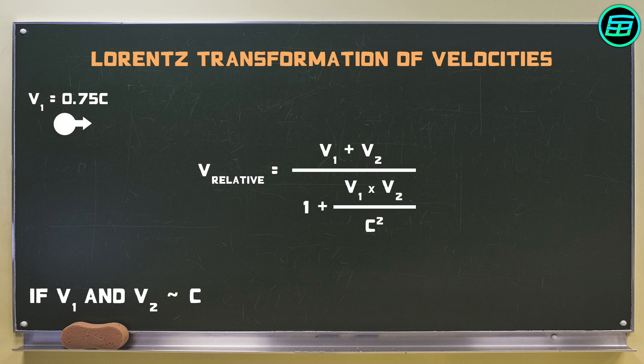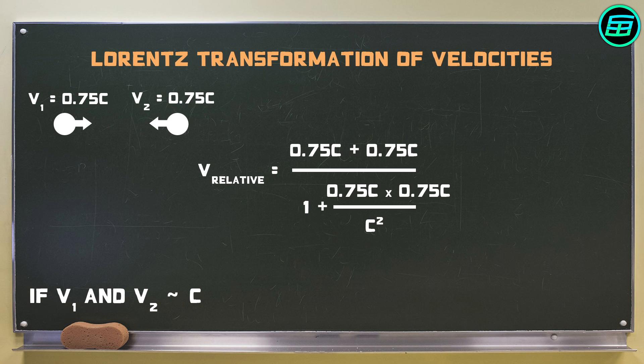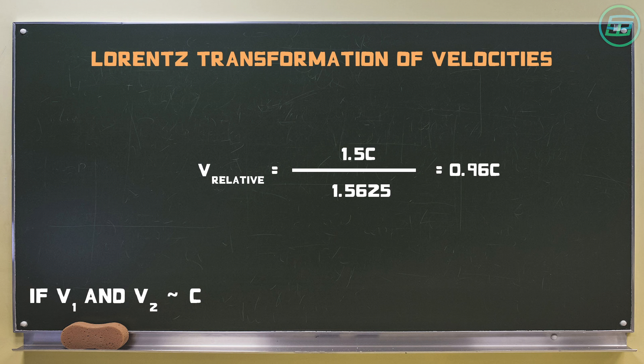Let's say the moving objects are each travelling at 75% of the speed of light, 0.75c, in opposite directions. Their relative velocity will be found to be 0.96c, or 96% of the speed of light.